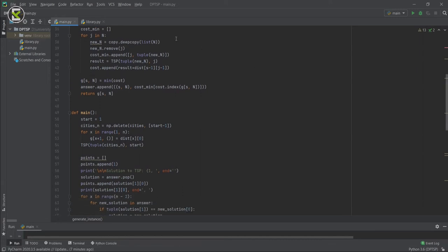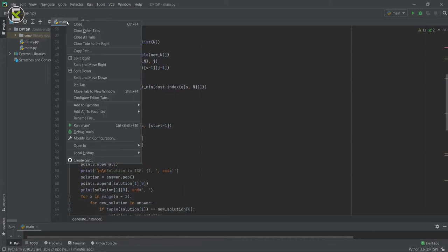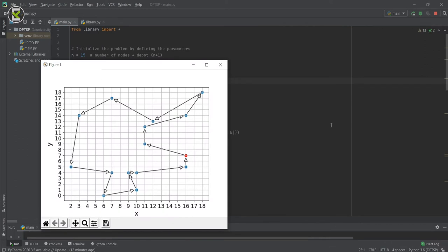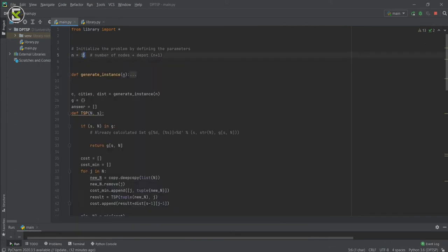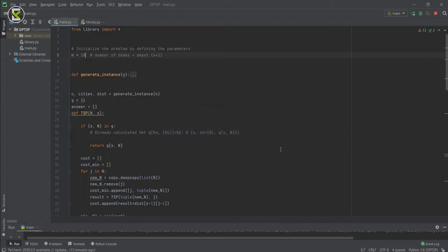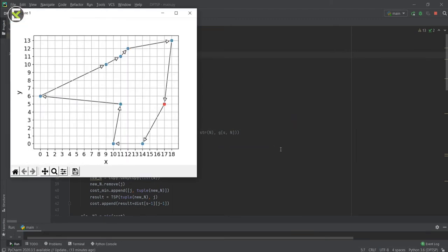Now let's run the program and see the results. Here we have the location of the cities and the optimal route to go through them. Let me run with some other parameters and see the results. Okay, that's it.